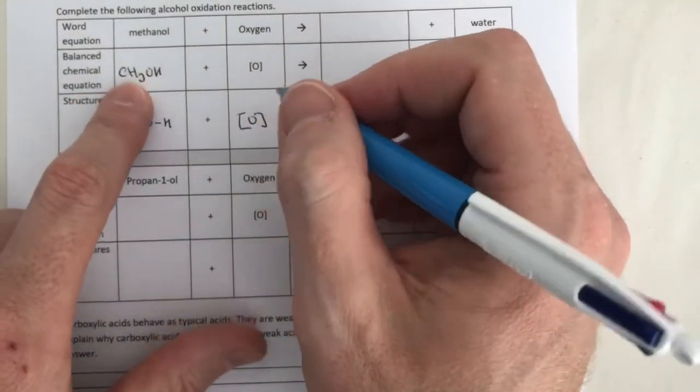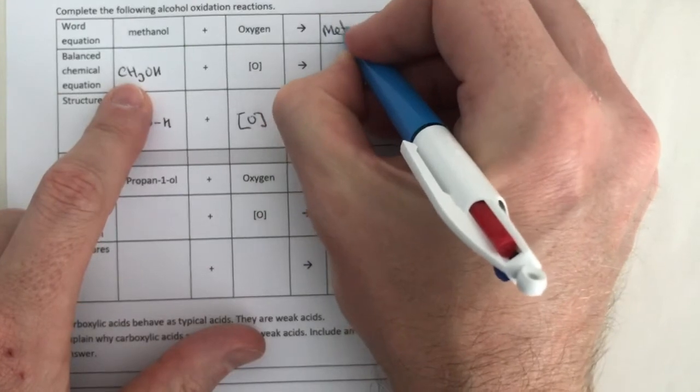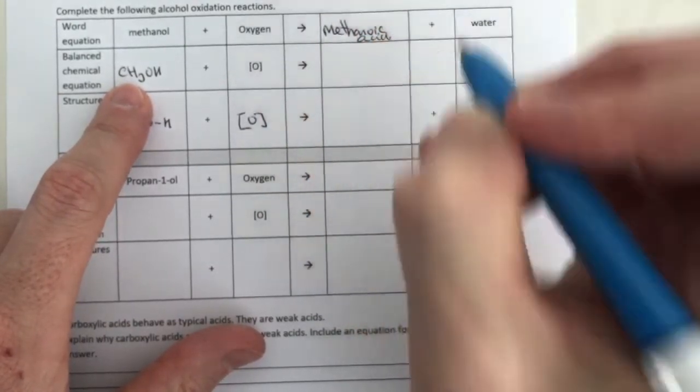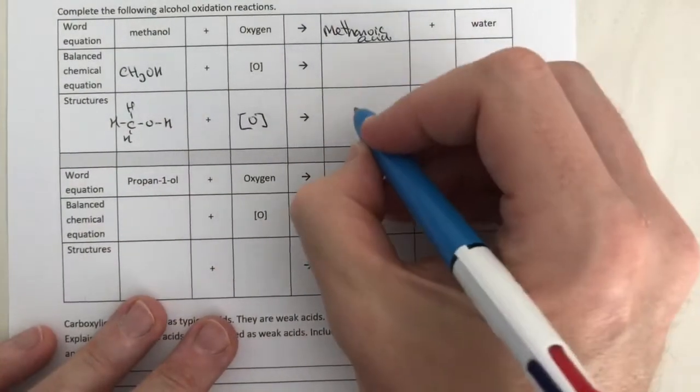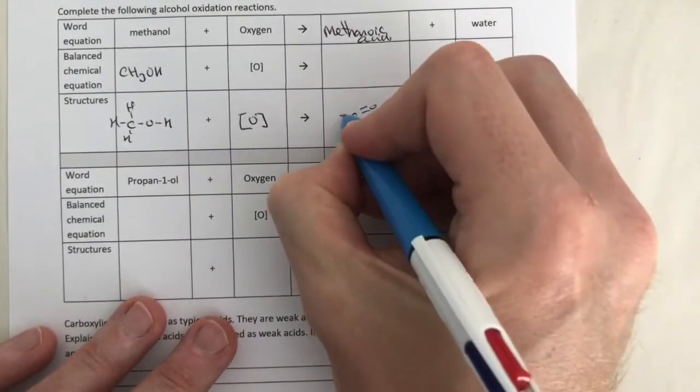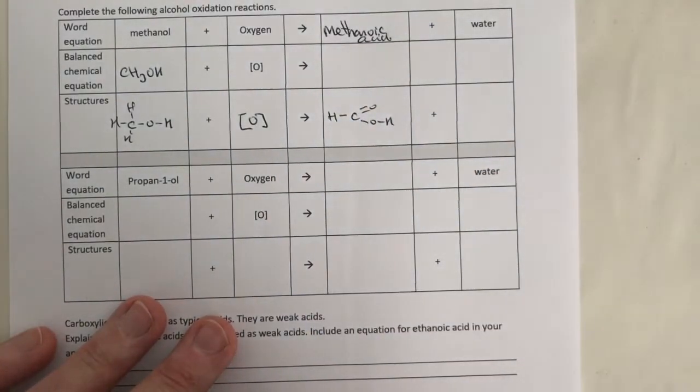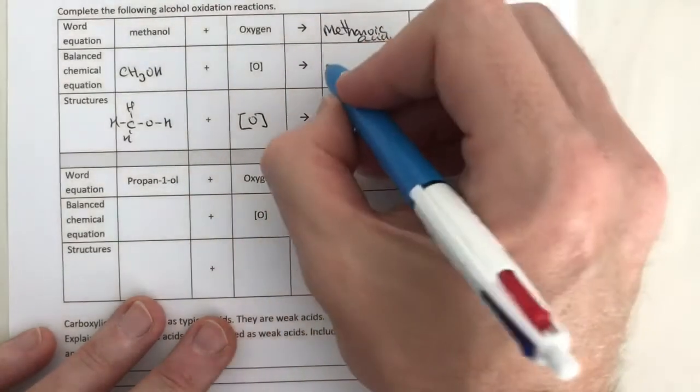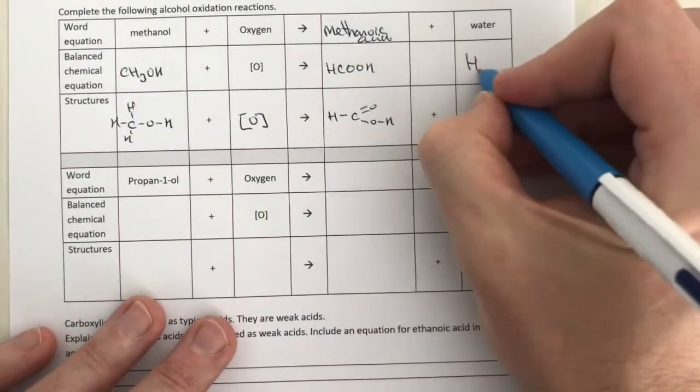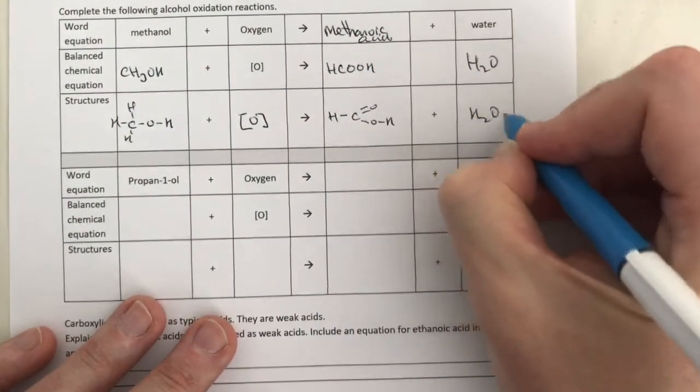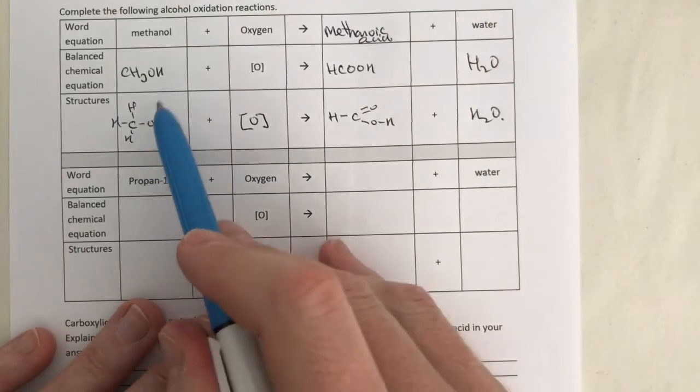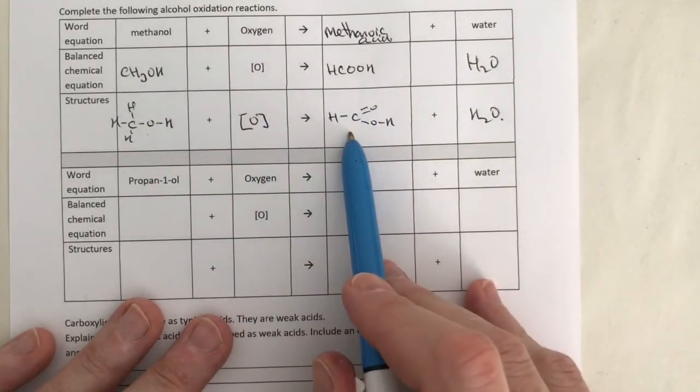Now, because it's methanol, it is going to make methanoic acid. Methanoic acid has got just one carbon, which is part of the functional group. Therefore, it's going to have just one bond left, which is the H. So this is HCOOH. And we still get our water on the end. So again, alcohol being oxidized to form a carboxylic acid.